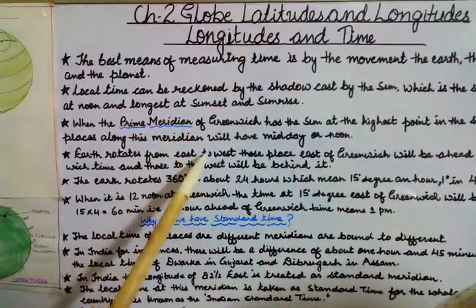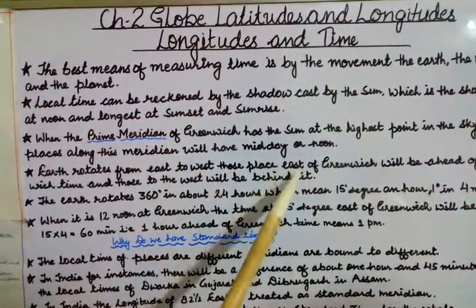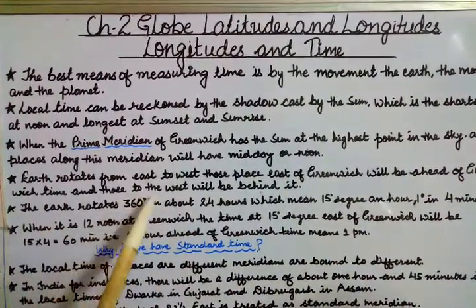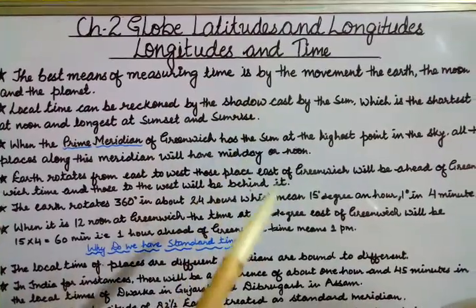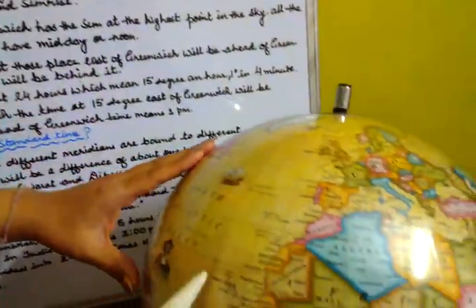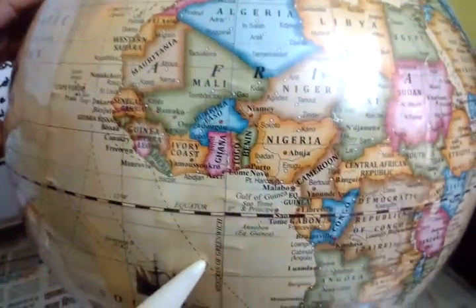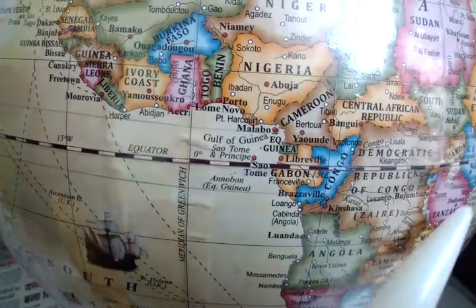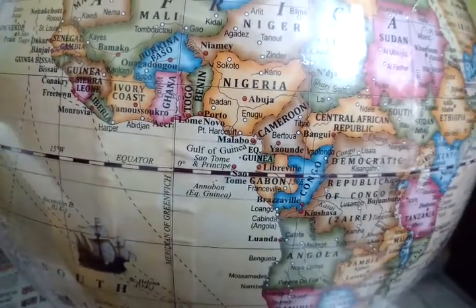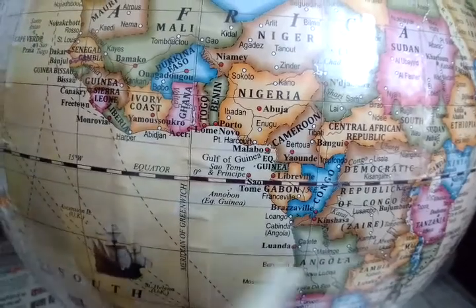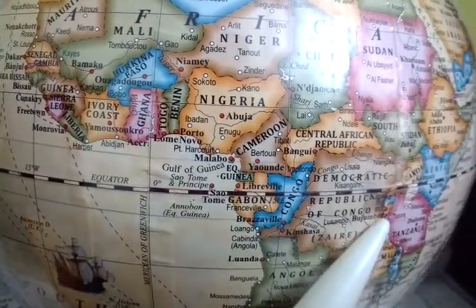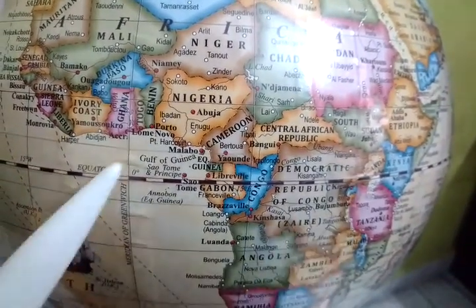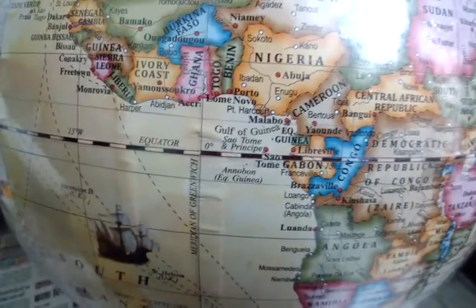Earth rotates from east to west. Those places east of Greenwich will be ahead of Greenwich time, and those to the west will be behind it. This is the Greenwich prime meridian — this is the east side and this is the west side. Countries to the east of Greenwich will have time ahead, and countries to the west will have time behind.